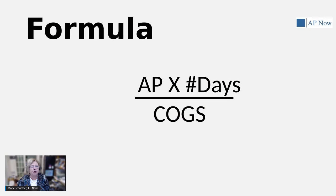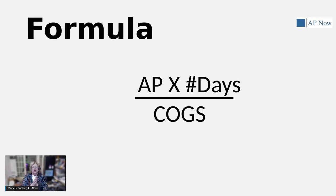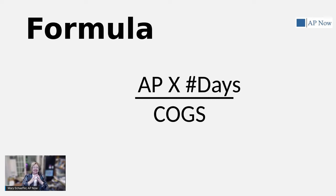Now let's take a look at the calculation — how you calculate DPO. It can be calculated on a monthly, quarterly, or annual basis, but typically it's done off the annual financial statements. DPO is calculated by taking the accounts payable figure at the end of the period, multiplying it by the number of days in the period, and then dividing it by the cost of goods sold. The accounts payable figure represents purchases that are made on credit that are due to suppliers. The resulting number represents the number of days that it takes an organization to pay its bills.